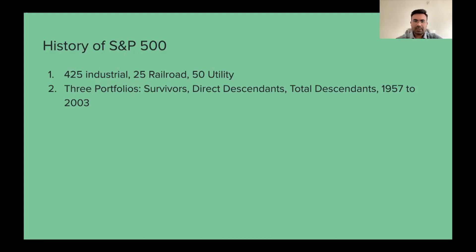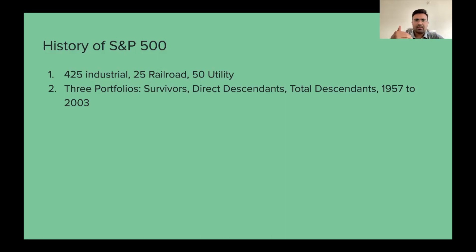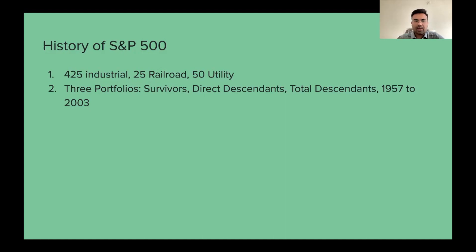First, the Survivors portfolio. Initially, many of the original S&P 500 companies were merged or went private. In the Survivors portfolio, Jeremy Siegel took all the companies that were merged or went private — when their shares were sold — and reinvested the proceeds equally into the remaining S&P 500 companies. This ran from 1957 to 2003.